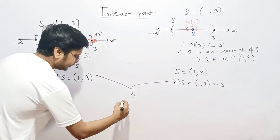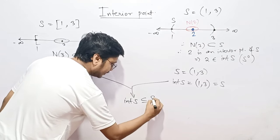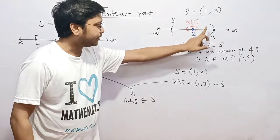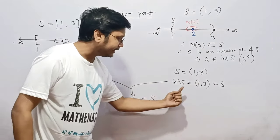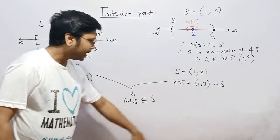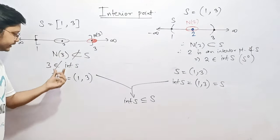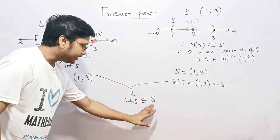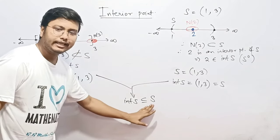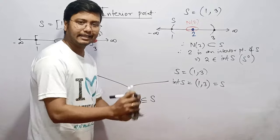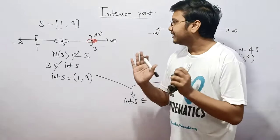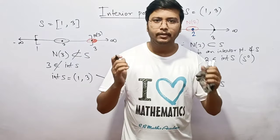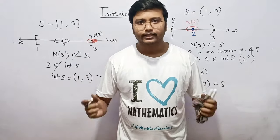In general, int(S) is a subset of S. When S is an open interval, int(S) equals S exactly. When S is a closed interval, int(S) is a proper subset of S. This is the general relation between int(S) and the set S itself, and that is the concept of an interior point. If anyone has any questions, please ask in the comment section. Thank you for watching.